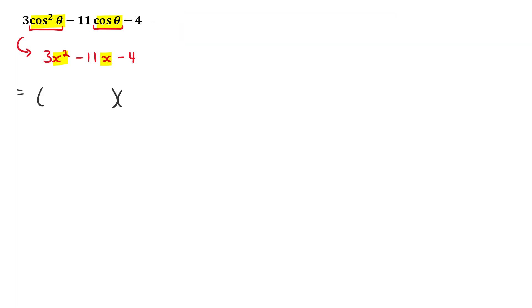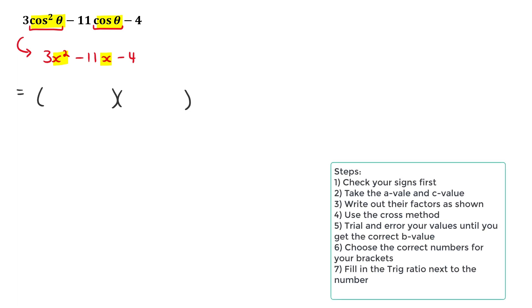When you start to factorize you write down your two brackets. By looking at the last sign you can decide what you need in those brackets. The rule is: if the last sign is negative, you have opposite signs in the brackets.